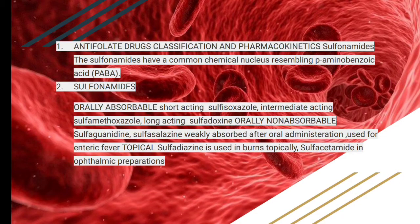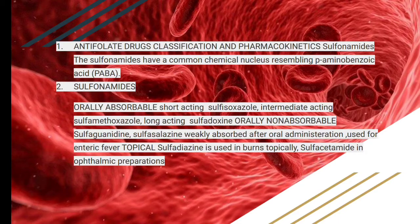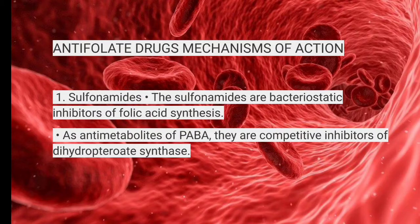Antifolate drug classification includes the sulfonamides. Sulfonamides are further categorized into the orally absorbable and the orally non-absorbable. Short-acting orally absorbable is sulfisoxazole, intermediate-acting is sulfamethoxazole, and long-acting includes sulfadoxine. Orally non-absorbable sulfonamides include sulfasalazine and sulfaguanidine, which are weakly absorbed after oral administration. Topically, sulfadiazine is used in burns or burn-associated sepsis and in ophthalmic preparations. The basic mechanism of action is as an anti-metabolite of PABA; they are competitive inhibitors of dihydropteroate synthase.